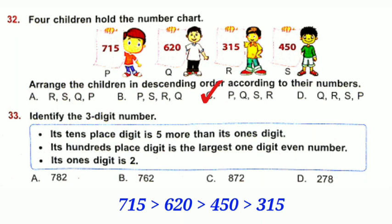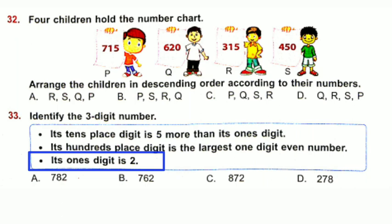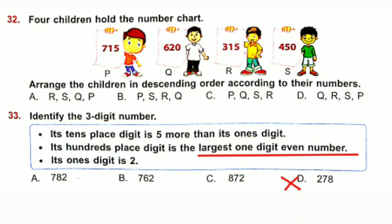Question number 33: Identify the 3-digit number. The last clue says its ones digit is 2, so option D is cancelled. The second clue says the hundreds digit is the largest 1-digit even number, which is 8 — so we need 8 in the hundreds place. The first clue says the tens digit is 5 more than the ones digit: ones is 2, tens should be 7. Option C has 8 in hundreds, 7 in tens, 2 in ones. 7 is 5 more than 2 — satisfied. Option C is correct.